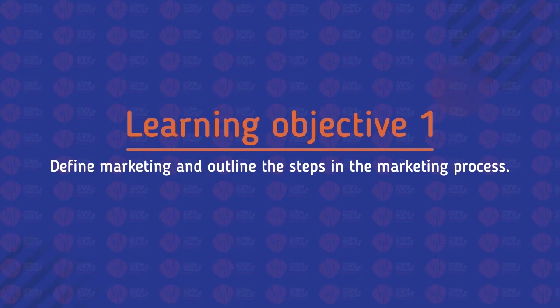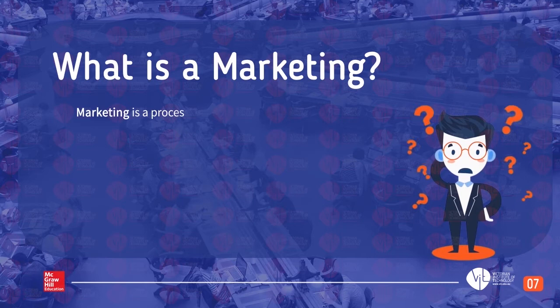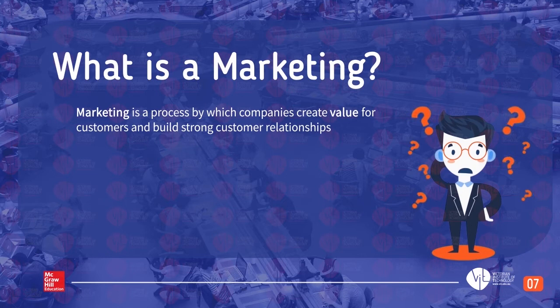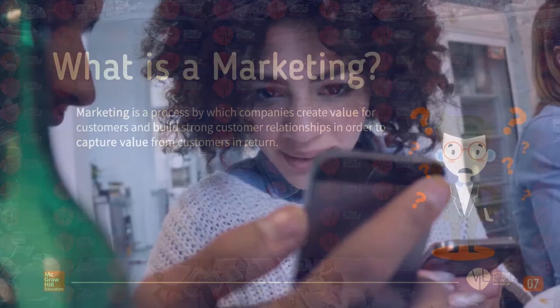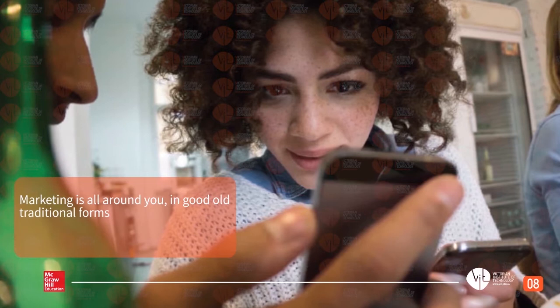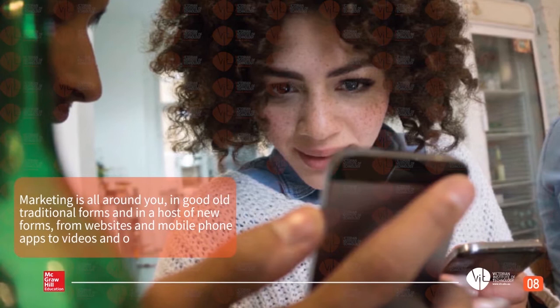Learning Objective 1: Define marketing and outline the steps in the marketing process. What is marketing? Marketing is a process by which companies create value for customers and build strong customer relationships in order to capture value from customers in return. Marketing is all around you, in good old traditional forms, and in a host of new forms — from websites and mobile phone apps to videos and online social media.